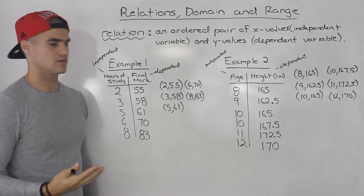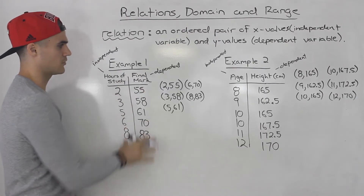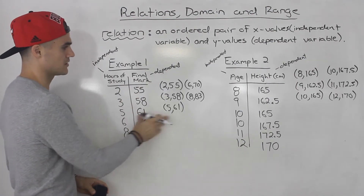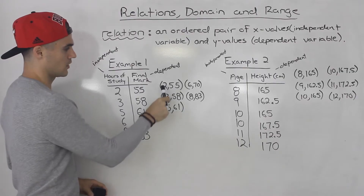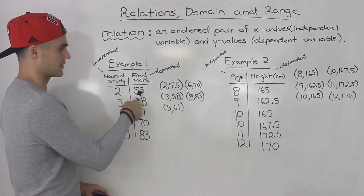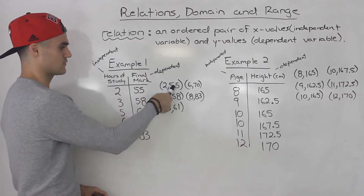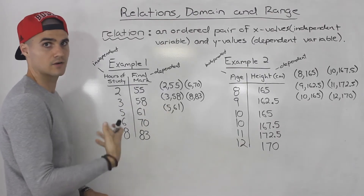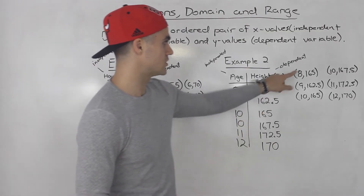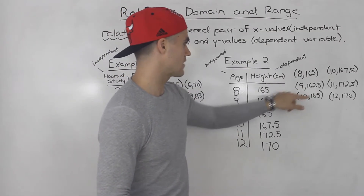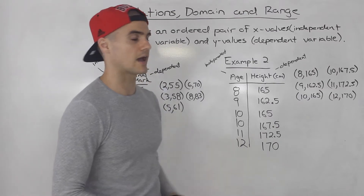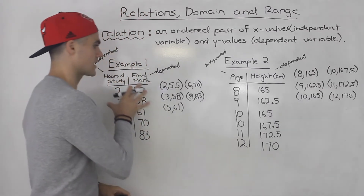Now, there are multiple ways to represent relations. You can have the relation in a table, but you can also have coordinates representing the relation. Notice we just took all these points and put them in coordinate form, where the x values are usually the independent variable — that's the hours of study — and then the corresponding dependent variable: (2,55), (3,58), etc. Same thing for example two: we took the independent variable of age, put it where the x values are, and the corresponding dependent variable — the height — goes where the y's are.